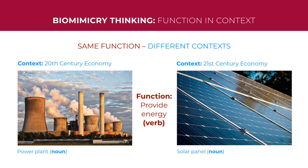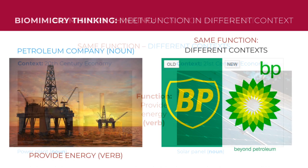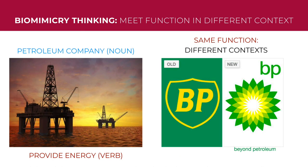Applying biomimicry thinking to human design, the function of providing energy in the context of 20th century economics is going to be met with a different strategy than the function of providing energy in the context of 21st century economics. For example, when BP defined itself as a petroleum company, it called itself British Petroleum. But in today's world, they realized they needed to name themselves Beyond Petroleum and focus on their core function of providing energy, so they can meet that function in different ways depending on changing contexts.